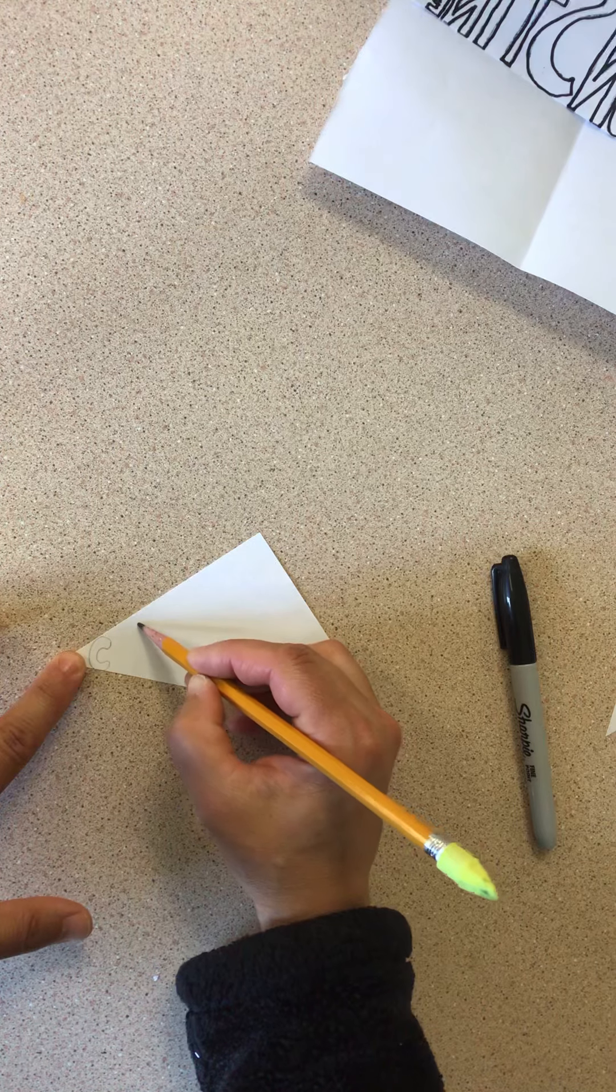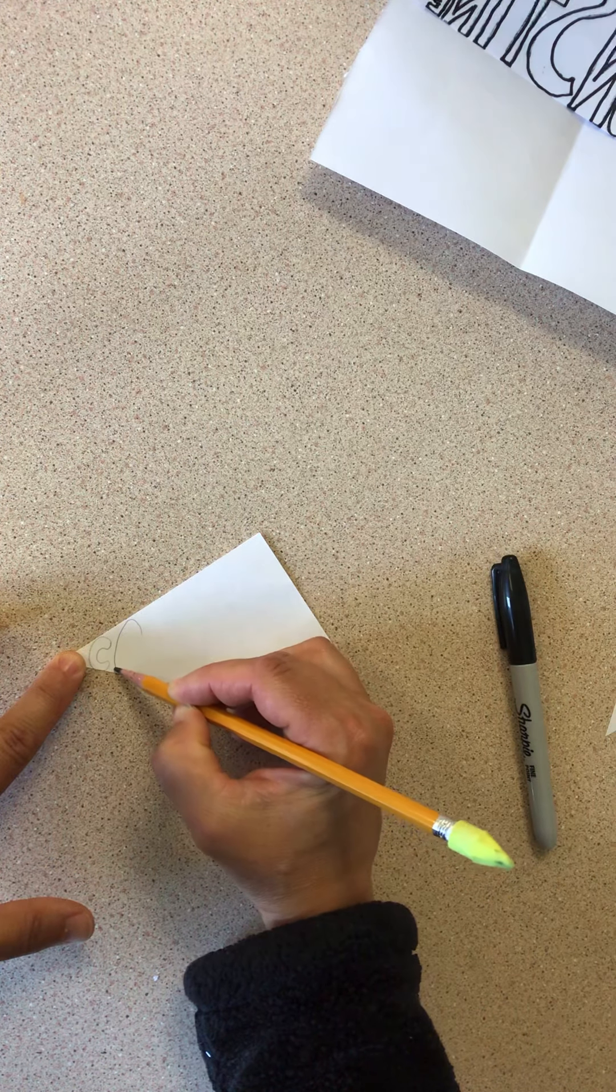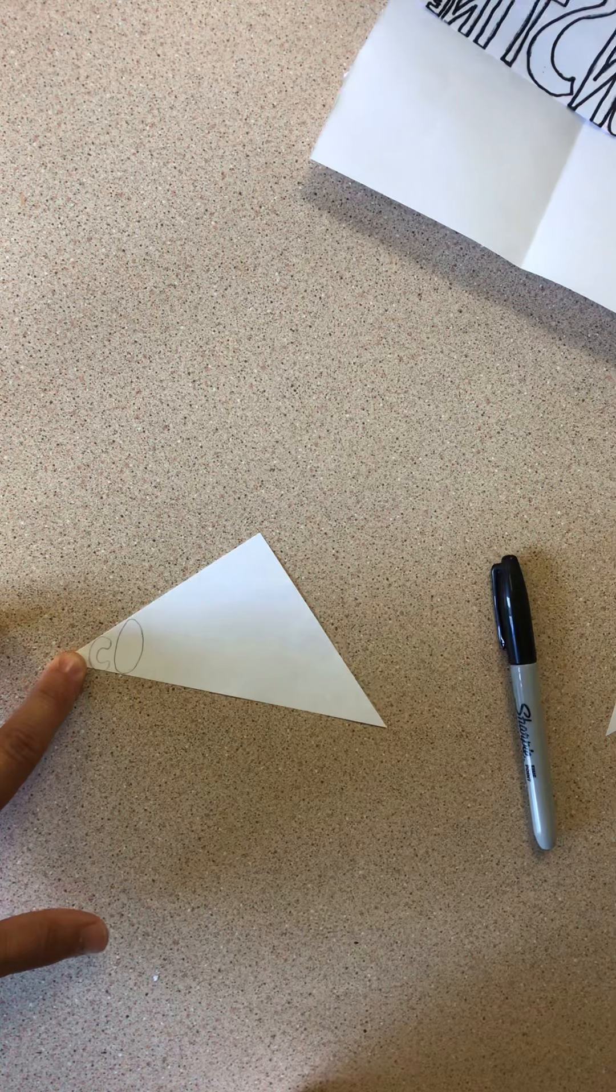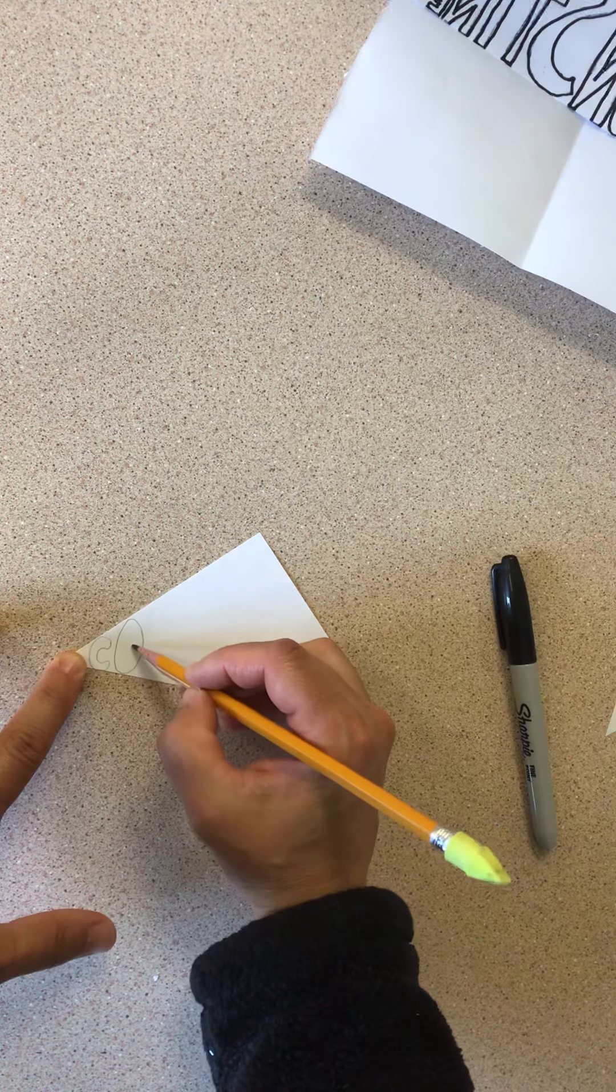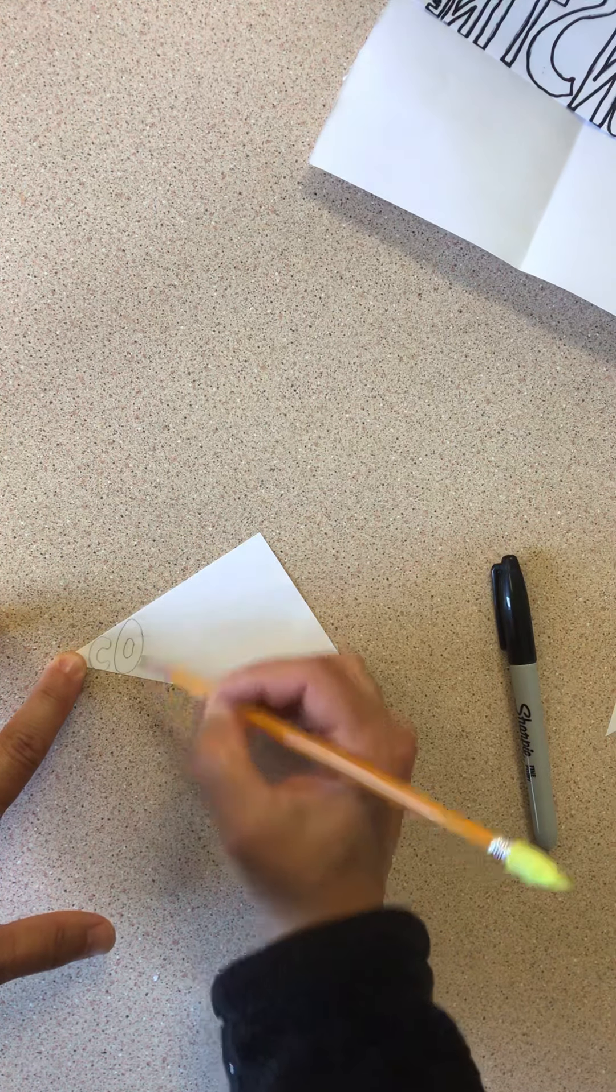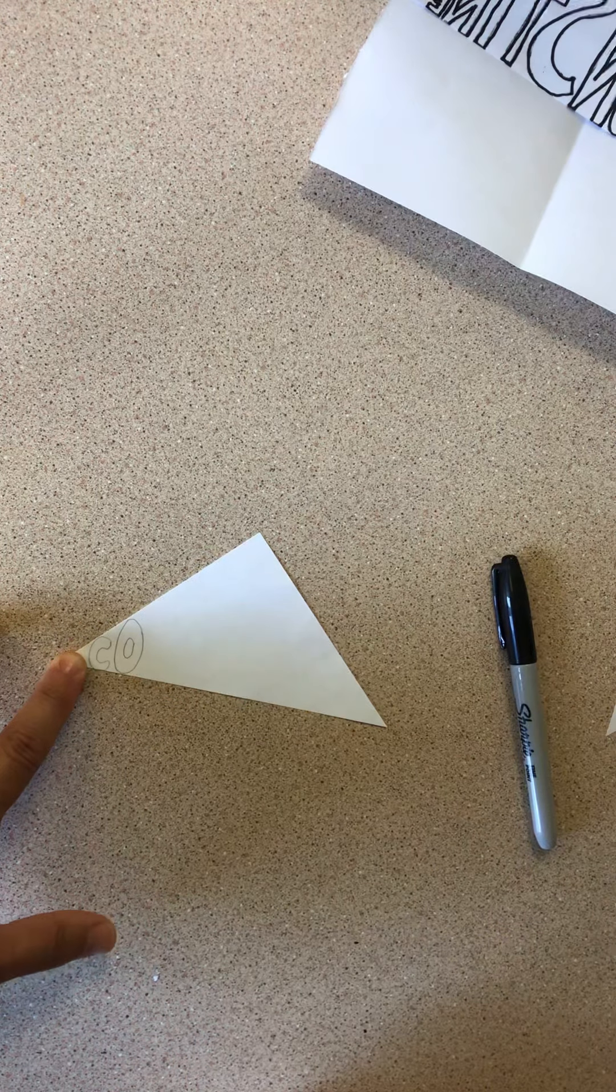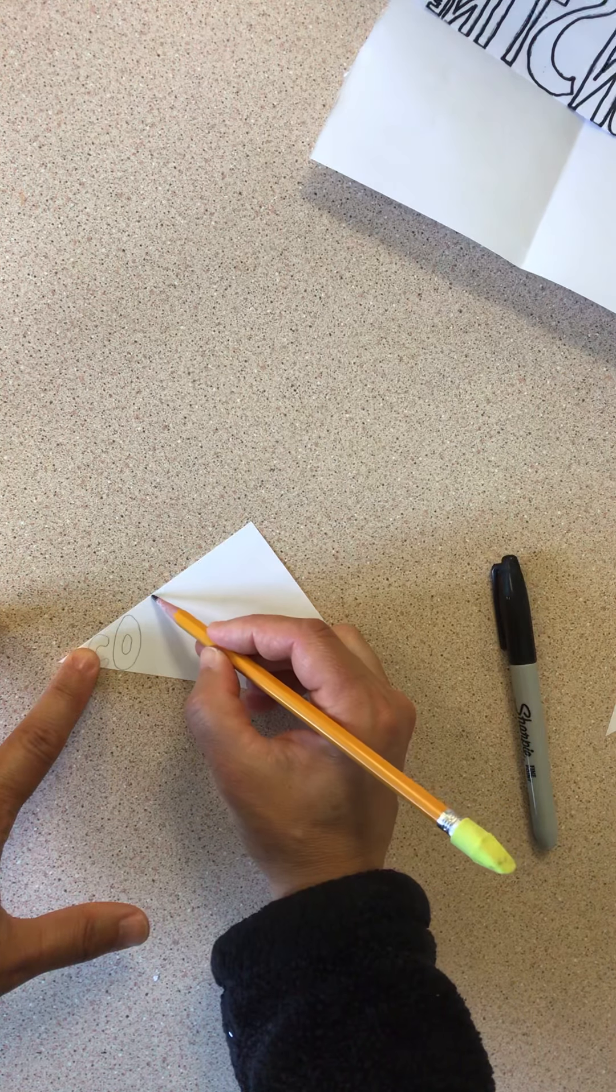Then I'm going to make my O because I want it to touch the top and the bottom of this triangle. So every letter should touch the top and the bottom of the paper. Now my next letter is an N,